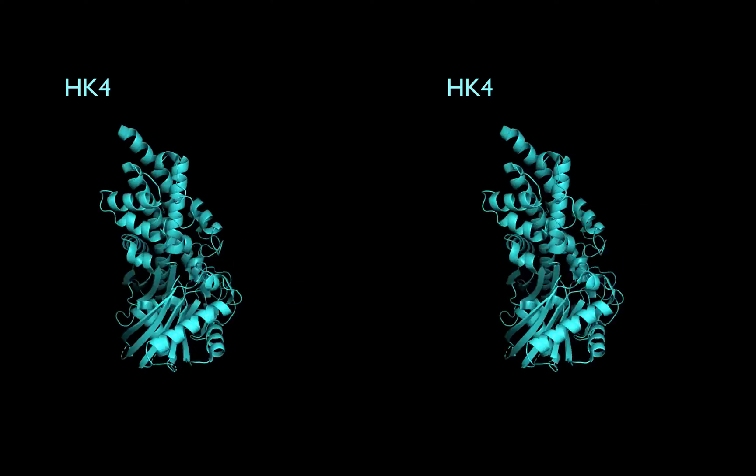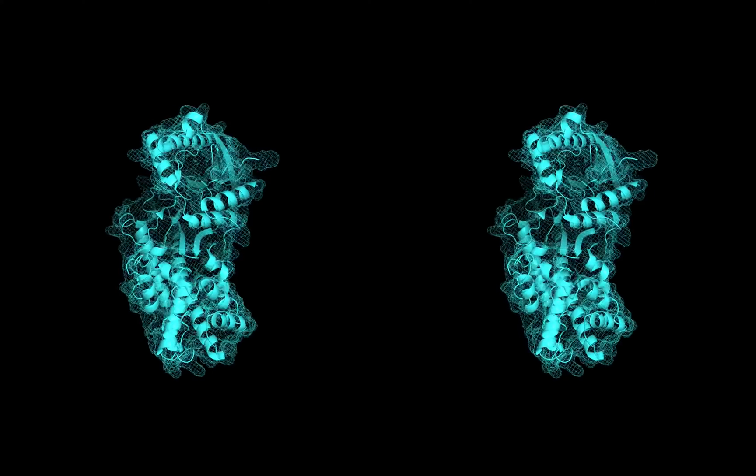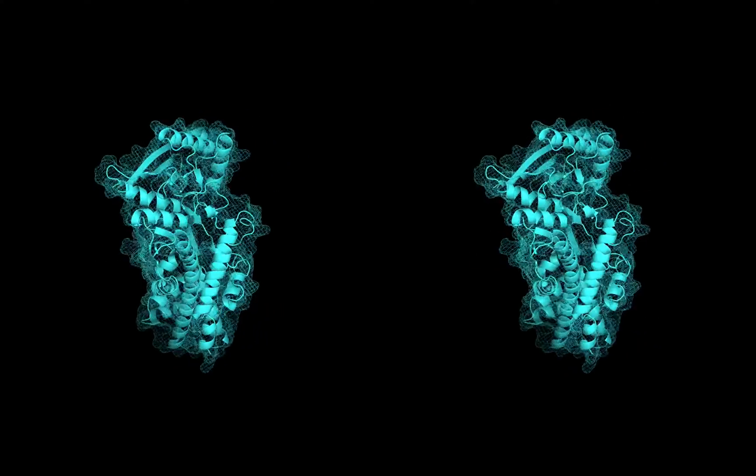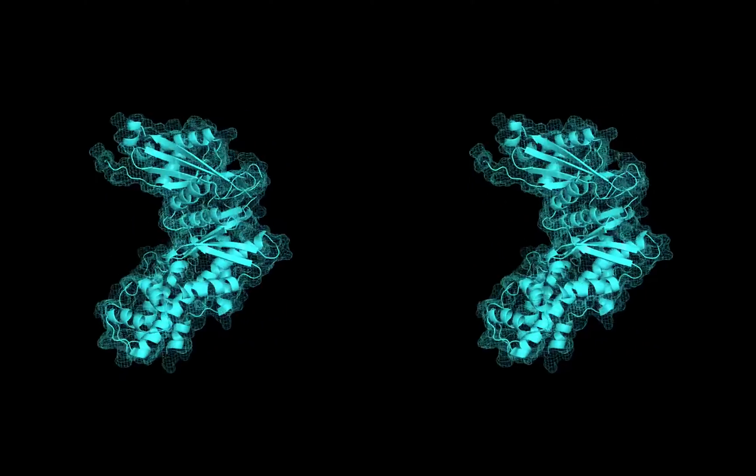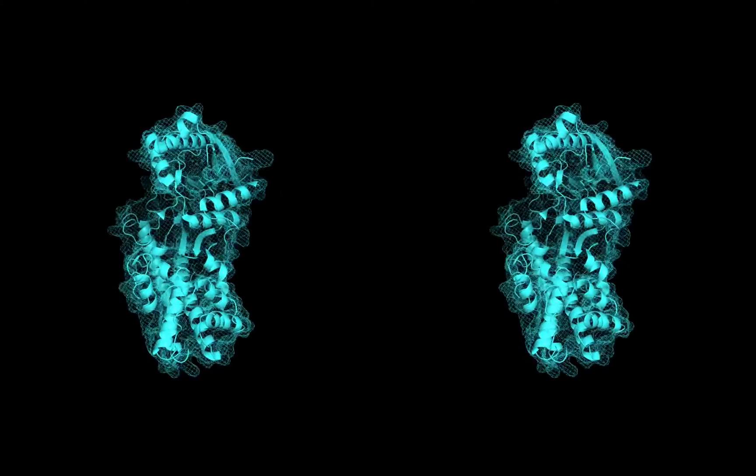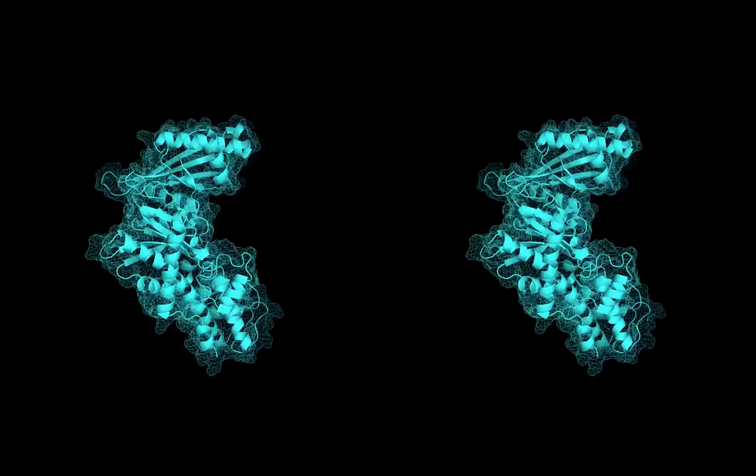First, let's look at hexokinase 4, also called glucokinase. This form is predominantly found in the liver, and when glucose levels are high, it facilitates storage of glucose as long chains of glycogen for later use.